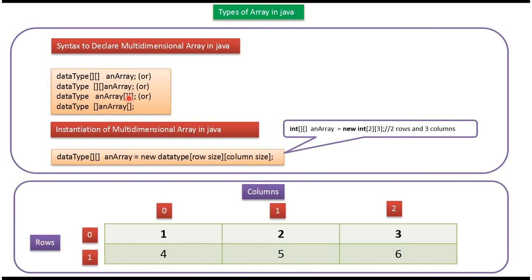Here you can see how to declare and instantiate a multidimensional array. In the example, int is the data type with two square brackets, and intArray is the variable name. After the 'new' keyword, int is the data type, the row size is 2, and the column size is 3.